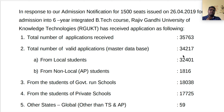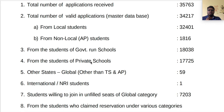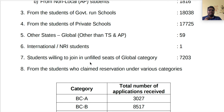Local students: 32,401 and non-local students: 1,816. Applications from government school students: 838 and private school applications: 17,725. Other states and global category applications: 59. International applications: 1. Students willing to join unfilled global category seats: 720.